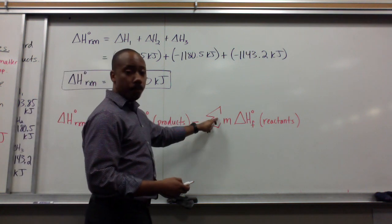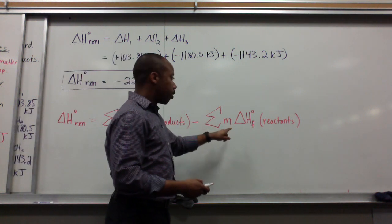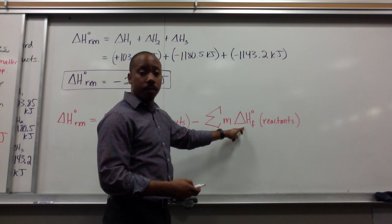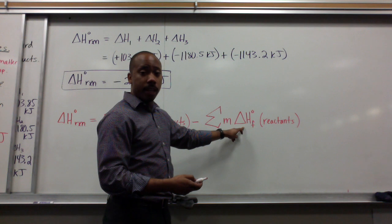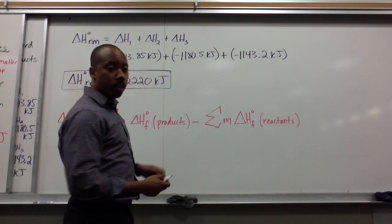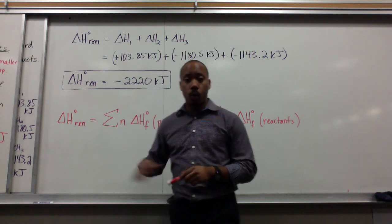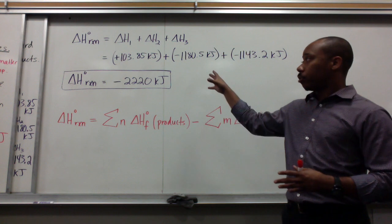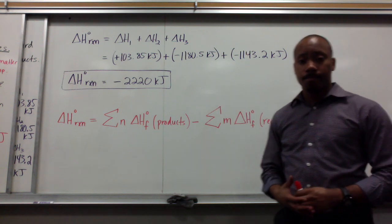This big E here is the sum of the number of moles of the changes in enthalpy of formation at standard states of your products minus the sum of the number of moles times the change in enthalpy of formation at standard states of your reactants. So take note of this. Next class we'll work with this equation and learn how to use it properly and get the same exact answers as we got up here. Thanks gentlemen.